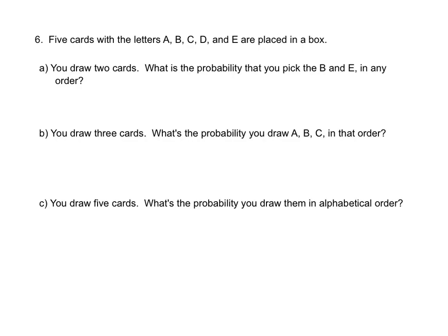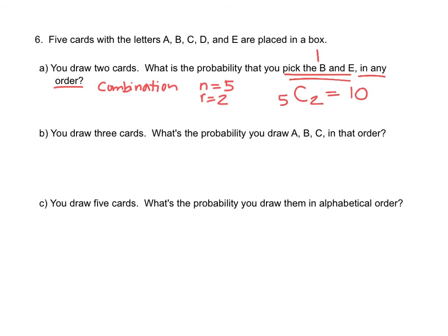Let's look at a quick probability example using permutations and combinations. Suppose we have five cards with the letters A, B, C, D, and E placed in a box. You draw two cards. What's the probability that you pick B and E in any order? Here it says 'in any order,' so the order doesn't matter, which means it's a combination. Our total number of letters is five, so N is five, and I want to pick two letters — R is two. Calculate 5C2, and that ends up being 10. There are 10 different groups of two possible. We want to pick the B and the E, which is just one of those groups, so the probability would be one out of 10.